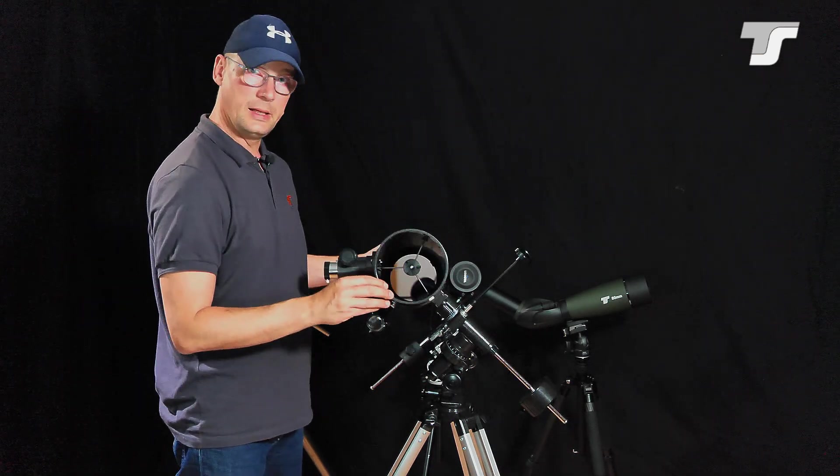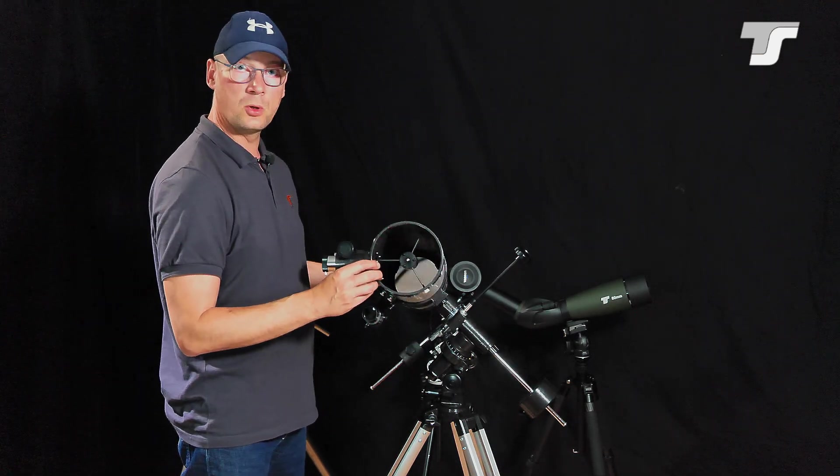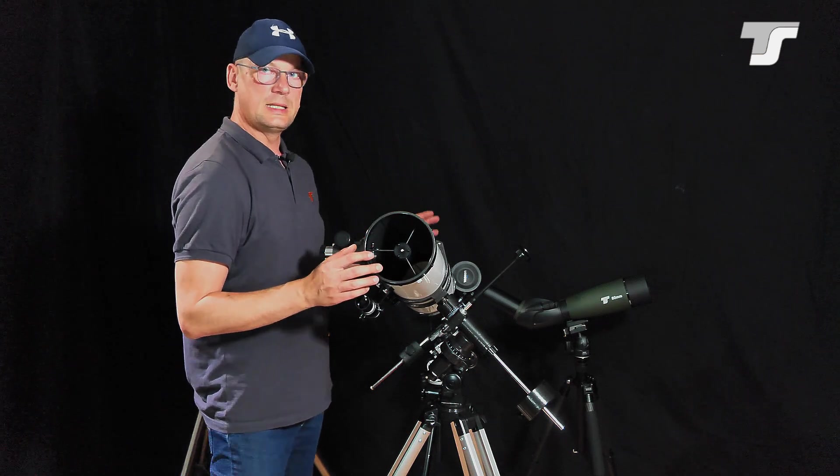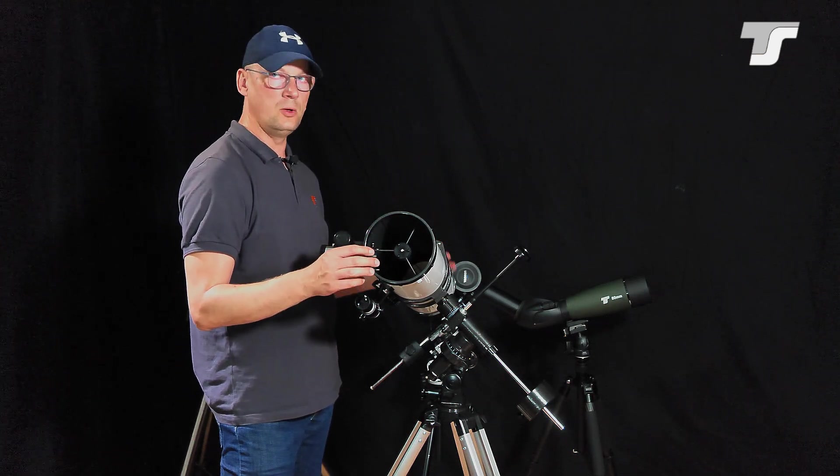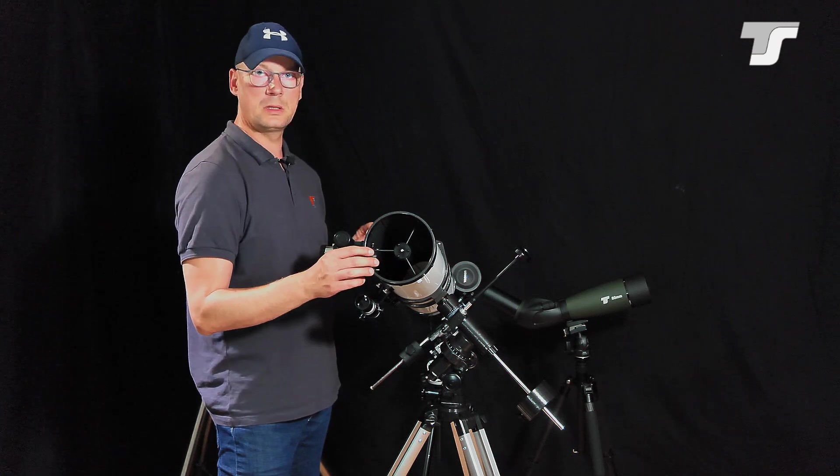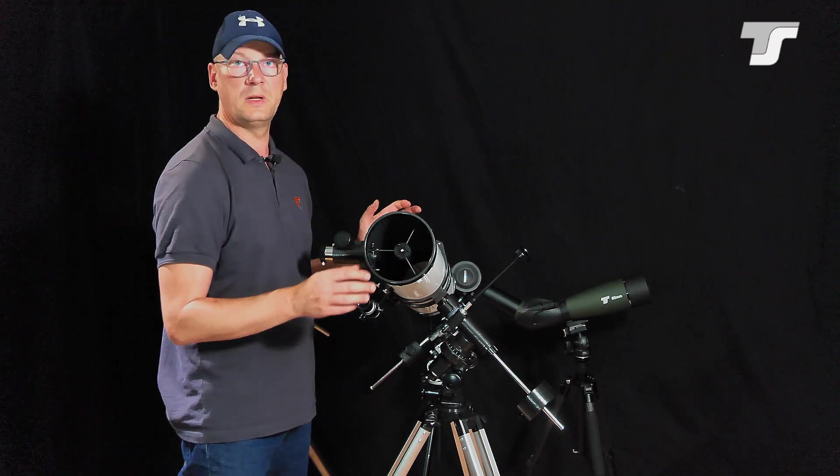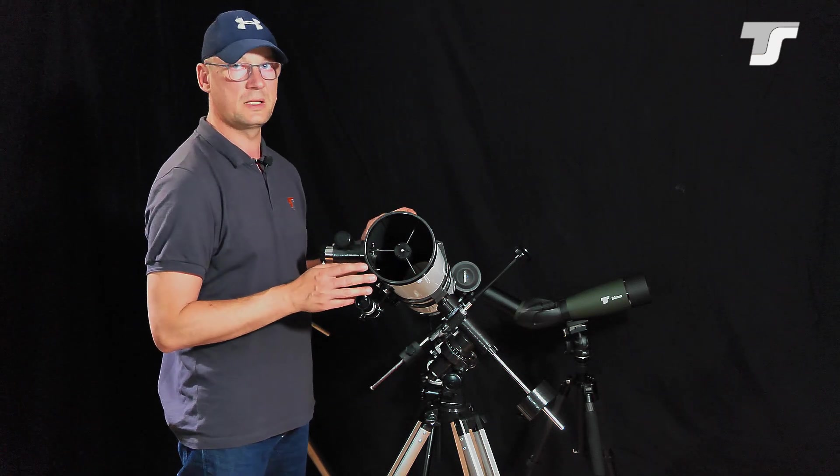In the back you see the primary mirror. This is a glass element which is curved and coated with aluminum, a very thin coat of aluminum with high reflectivity, more than 90 percent.